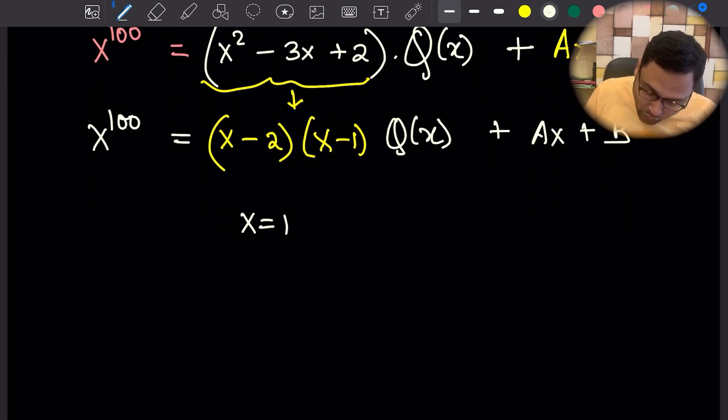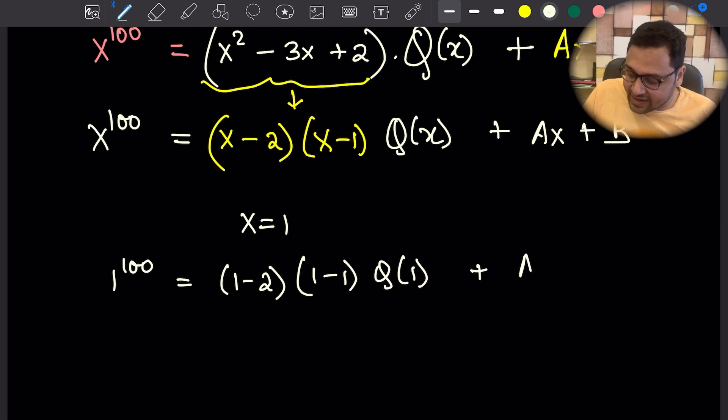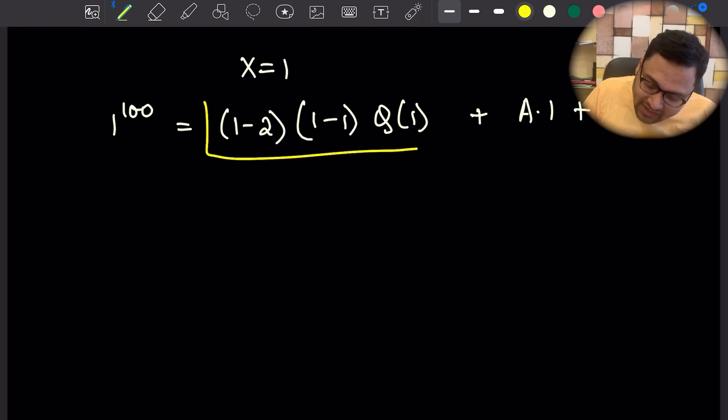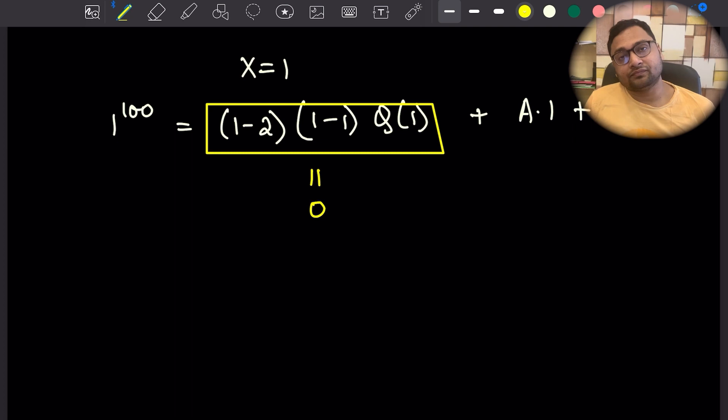If you plug in x equals 1, you will get 1 to the power 100 equals (1 minus 2)(1 minus 1)Q(1) plus a times 1 plus b. Notice most usefully, this particular part becomes 0, so what you have is 1 equals a plus b.